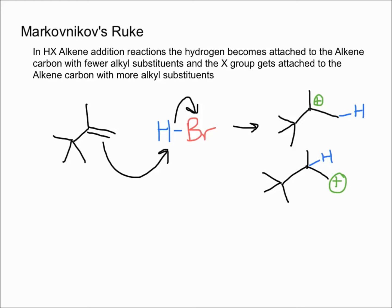Now, as you can see on the right, we have two choices — two carbocations that could form, because the hydrogen can be added to either side. However, only one is going to form. Down here we have a primary carbocation, which is very unstable and very unlikely to form.